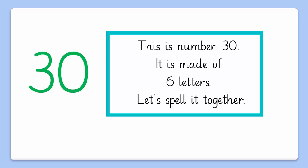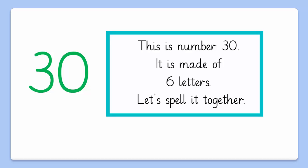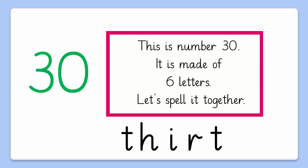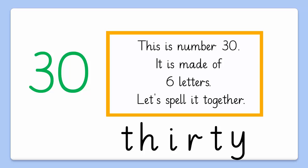Now let's move on to the next one. This is number 30. It is also made of 6 letters. So let's spell it together: T, H, I, R, T, Y — 30. That's great.